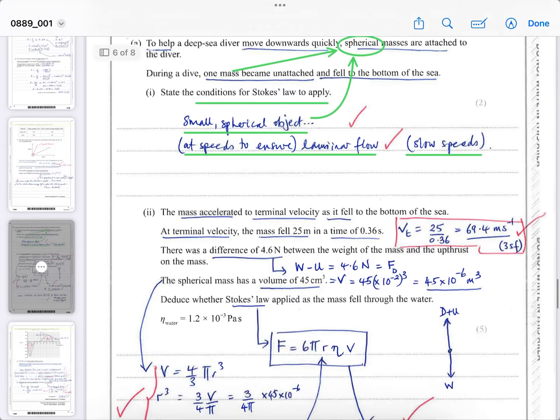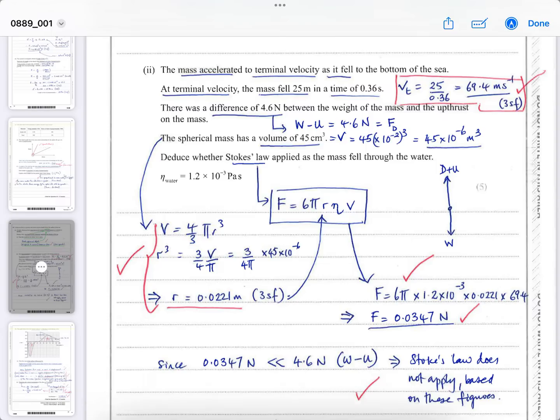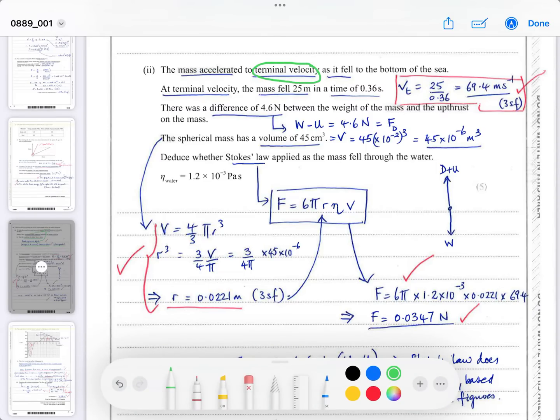It then says the mass accelerated to terminal velocity, which means it reaches its constant speed as it fell to the bottom of the sea. You can work out its terminal velocity because the mass fell 25 meters in a time of 0.3 seconds. So immediately you know that velocity is distance over time. So you divide 25 by 0.36 seconds. You can work out that the terminal velocity was 69.4 meters per second to three significant figures.